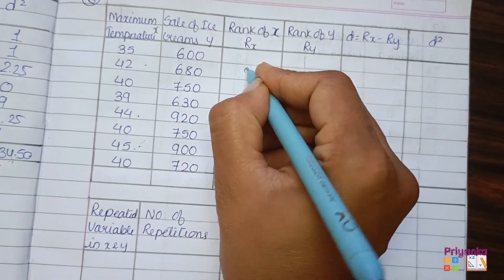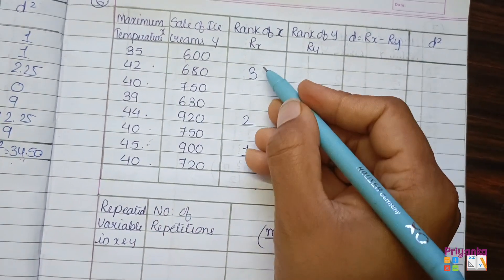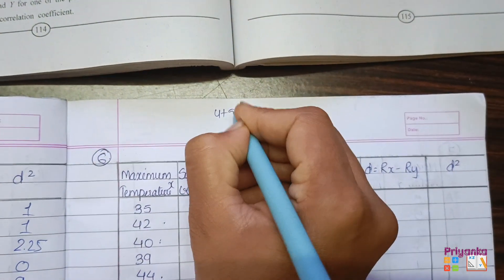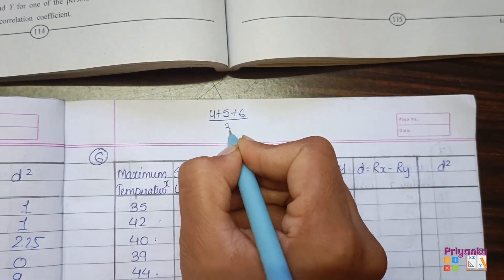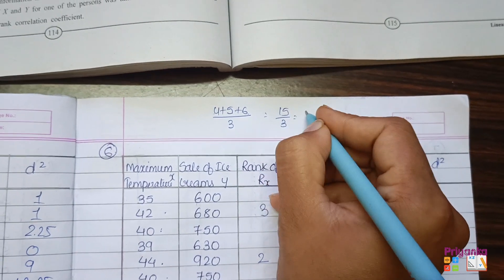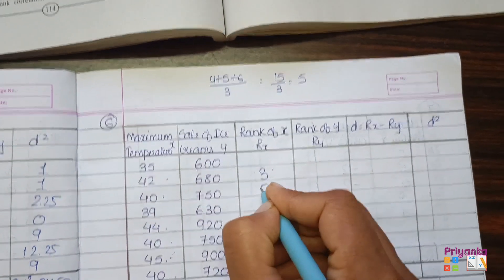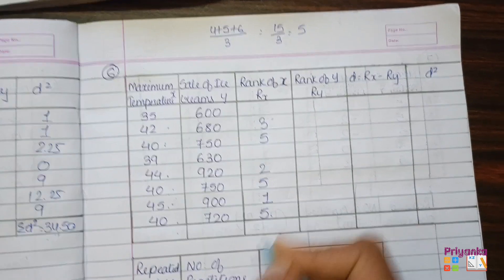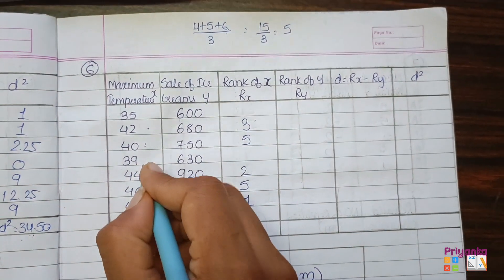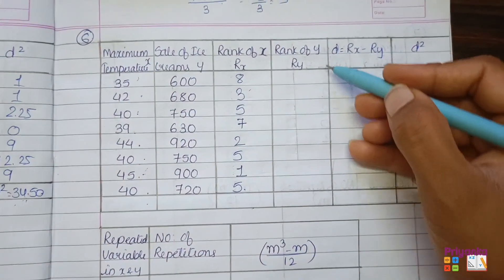Find the highest number in the temperature column, which is 45 — it gets rank 1. Next is 44, rank 2. Then 42 gets rank 3. Next, 40 appears 3 times. The positions would be 4th, 5th, and 6th rank. Average = (4+5+6)/3 = 15/3 = 5. So all three values of 40 get rank 5. After rank 6 is exhausted, the next rank given is 7 for 39, and rank 8 for the last value. Rx ranking is complete.